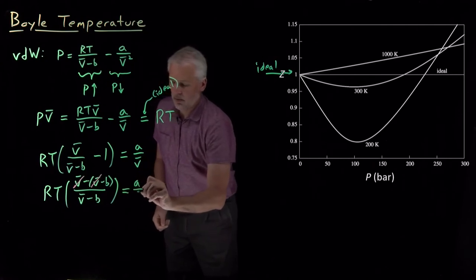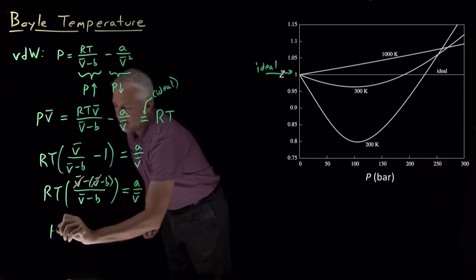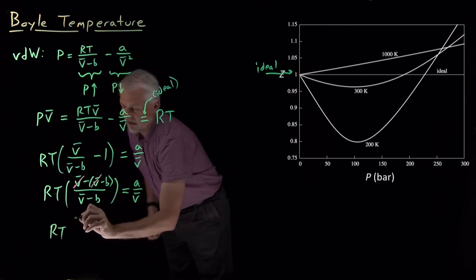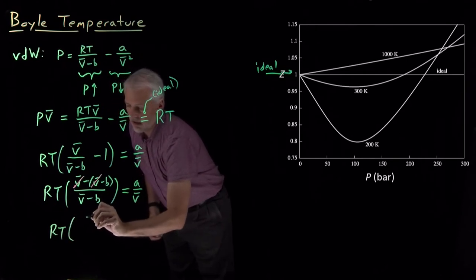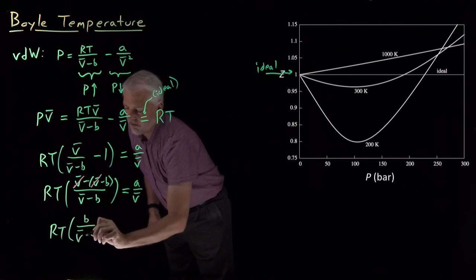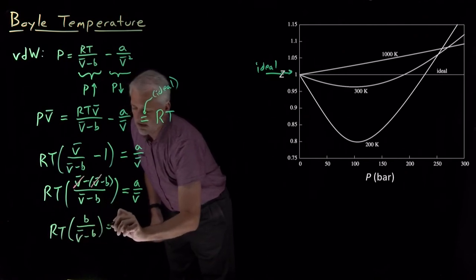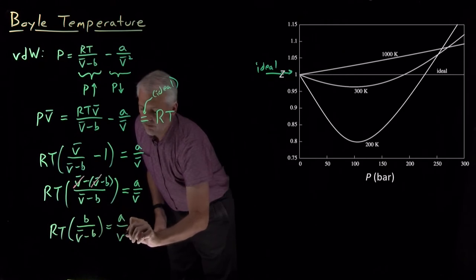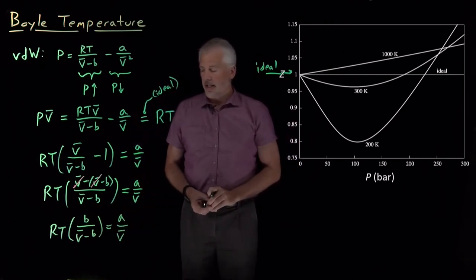And on the left, things will be a little simpler. So I've got what I'm left with is RT times positive negative negative makes a positive B over V-bar minus B. And that's all equal to A over V-bar when our van der Waals model is behaving ideally.